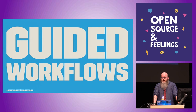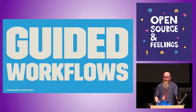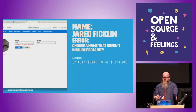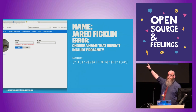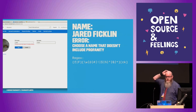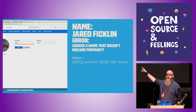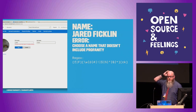Empathetic design makes it extremely difficult to make mistakes. Empathetic design knows that a user's name could be anything and therefore can't throw an error. Jared Ficklin, who goes by Ficklin on Twitter, posted this screenshot of him trying to create an account in a Microsoft system — the error says: 'Please choose a name that doesn't contain profanity.'